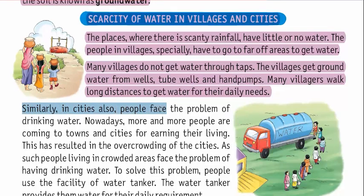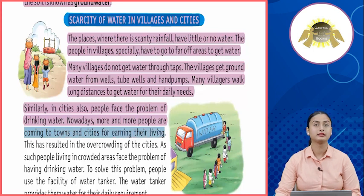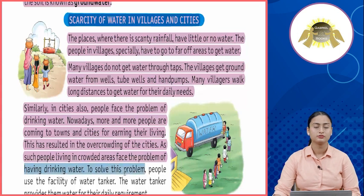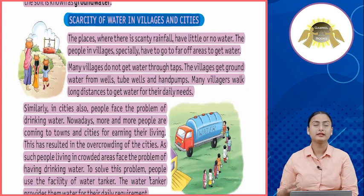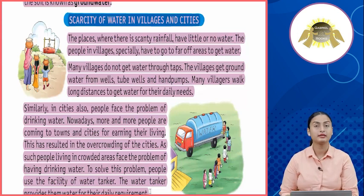Similarly, in cities also, people face the problem of drinking water. More and more people are coming to towns and cities for earning their living, resulting in overcrowding. People in crowded areas face drinking water shortage. To solve this problem, people use water tankers for their daily requirement. Toh jo cities mein overly crowded population hai, uski wajah se cities mein bhi paani ki kami ho rahi hai. Is kami ko poora karne ke liye water tankers available rehte hain.